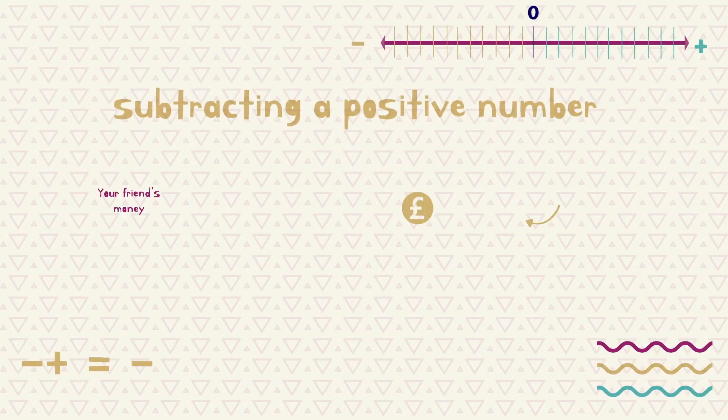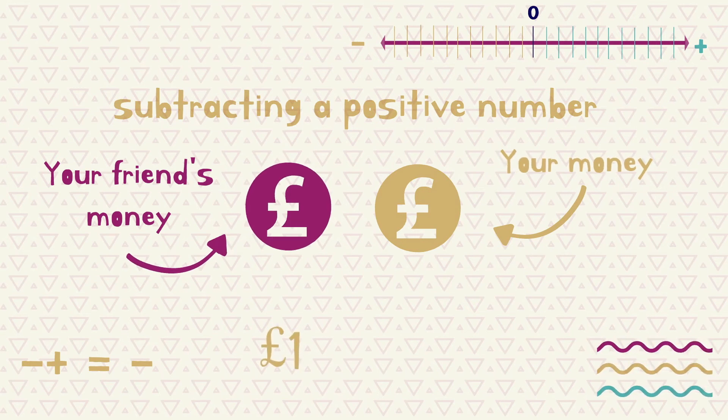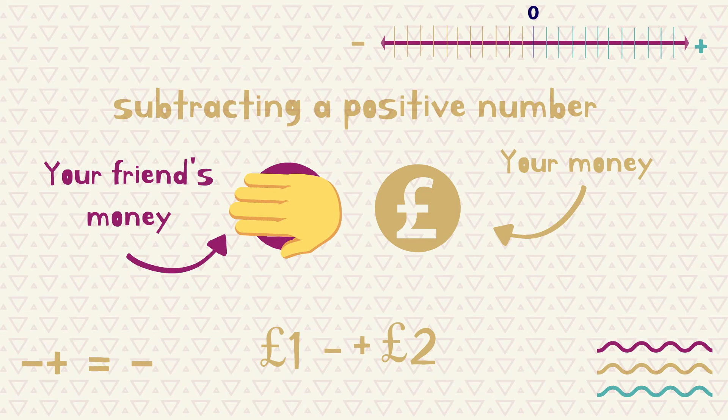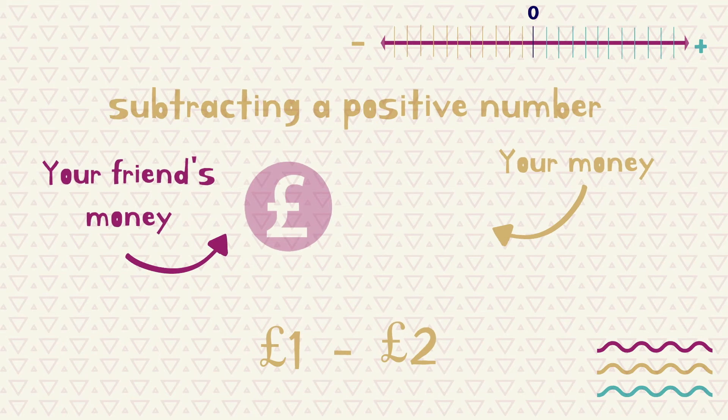Thinking of this in terms of money. Let's say you have £1, but you want to buy something that is £2. So you borrow £1 of your friend's money. You now owe your friend £1, so you are left with minus £1.